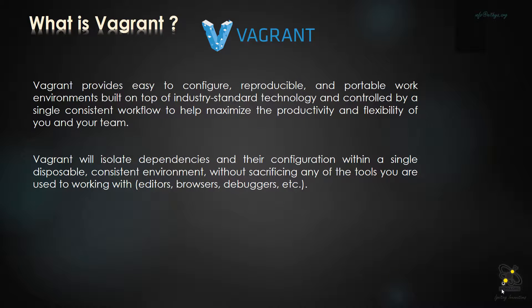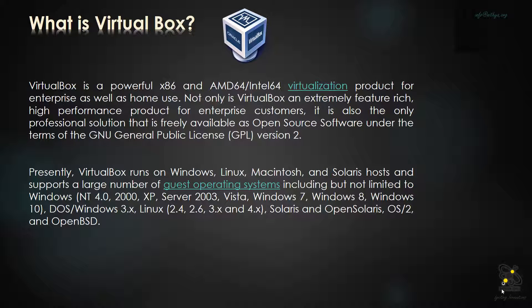Vagrant provides the environment to play, deploy, and test your applications. You can set up environments for dev, staging, and even pre-production. It also supports cloud vendors like AWS, Azure, or Google Cloud, providing a consistent environment so developers have confidence before pushing to production. Now let's look at what VirtualBox is. VirtualBox is a hypervisor that virtualizes your hardware into many logical pieces.